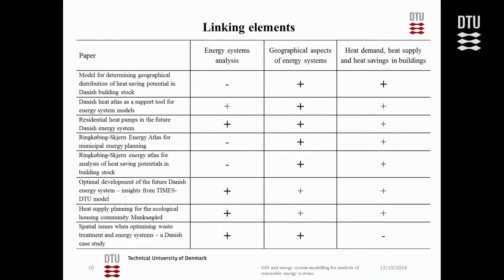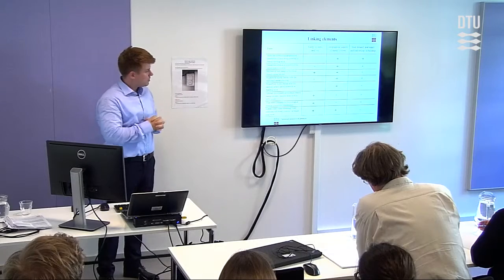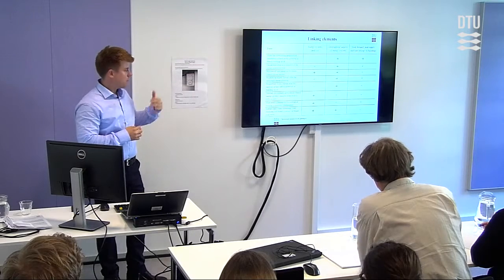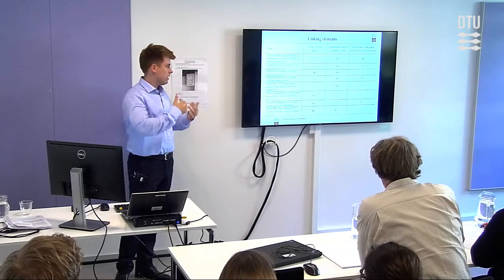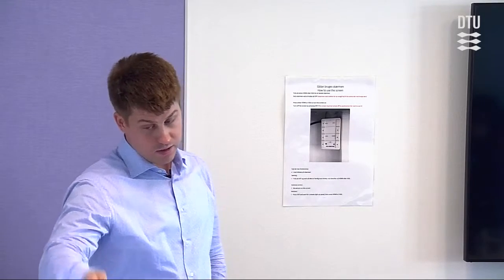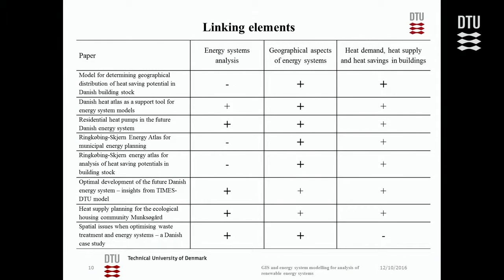There are three elements which go through all or almost all the papers, listed in the table: energy systems analysis, geographical aspects of energy systems, and heat demand, heat supply, and heat savings in buildings. I use three symbols: a bolded plus means this is a main topic in the paper, a non-bolded plus means it is mentioned and used but not the main focus, and a minus means it is not utilized. As you can see, geographical aspects of energy systems are used in all the papers.